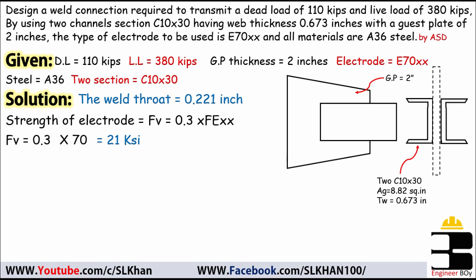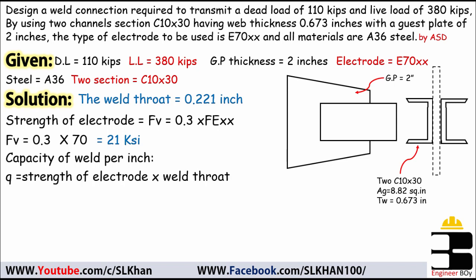With the electrode strength known, we can calculate the weld capacity per inch. This equals the electrode strength times the weld throat: q = 21 ksi × 0.221 inches = 4.64 kips per inch.